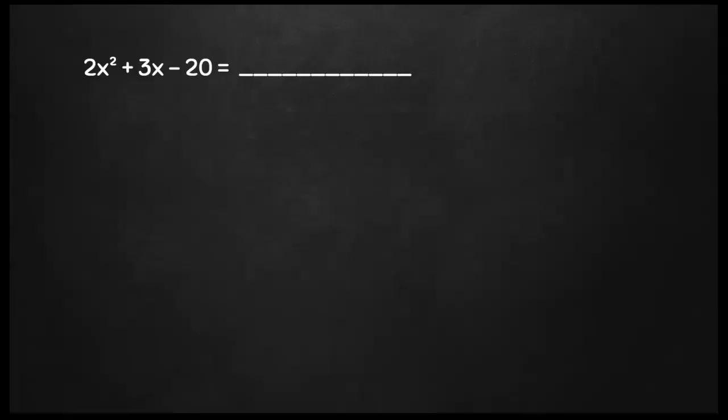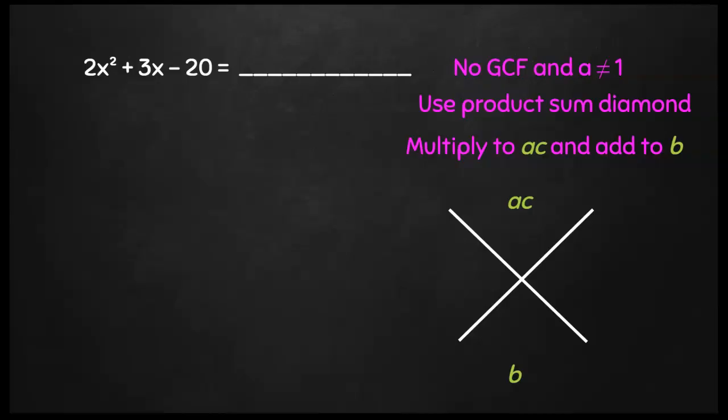Again, here we have another question that doesn't have an a value of 1. However, I don't actually have a GCF. So what I'm going to have to do is use what's called a product sum diamond, which means I'm going to make a diamond. And I want to find what numbers will multiply to a times c, or my a value and my c value from my standard form, and also add to b. So I have negative 40 and 3.